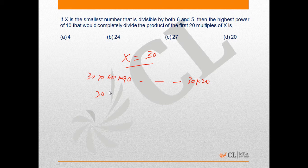30 raised to power 20 times 1×2×3...×20. This is equal to 30^20 times 20 factorial, since factorial n is 1×2×3...×n.